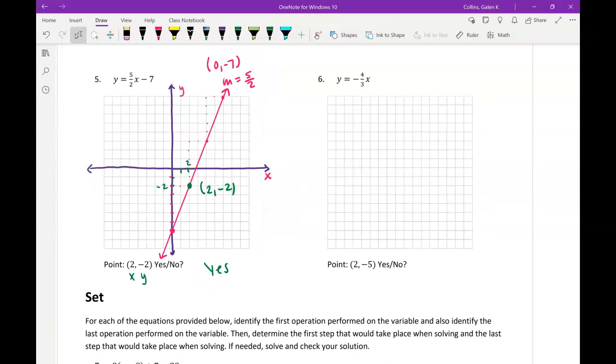And lastly, the way we could check that is plug in your x and y values to your actual equation. So negative 2 should equal 5 halves times 2 minus 7. And it does, because negative 2 is 5 minus 7, which is negative 2. That's all for the ready section.